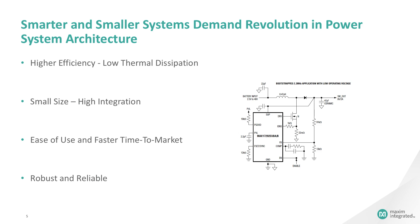If the power requirements change, the entire subsystem, including the discrete devices, must be redesigned. This is not particularly conducive to ease of use and faster time to market. Next generation integrated power ICs will incorporate most of the discrete logic, including compensation, and yet will deliver over 90% conversion efficiency across the range of load currents.